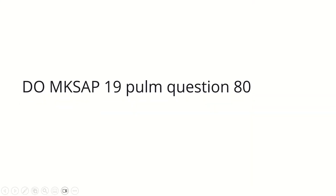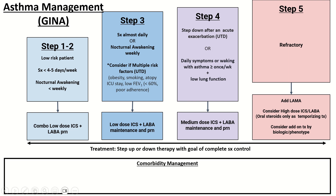To summarize management: ICS/LABA is the cornerstone. For refractory disease, think about biologics — especially for the allergic subtype. For neutrophilic or intrinsic-type asthma, tezepelumab is a key option as it targets TSLP, an anti-stromal lymphokine upstream of the inflammatory cascade.